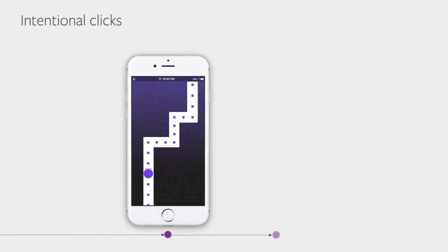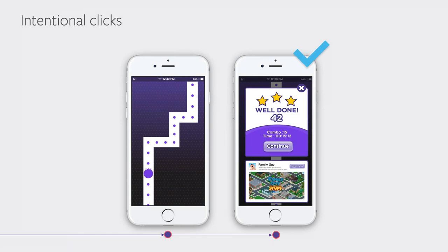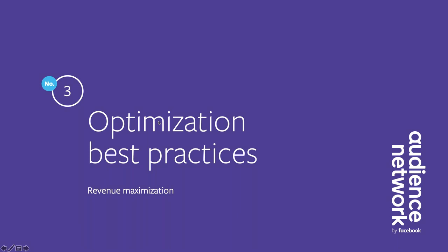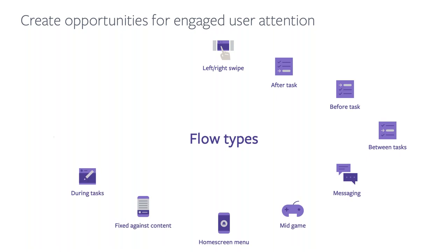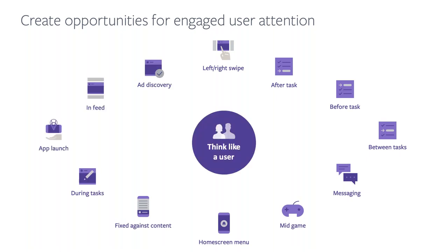The only clickable area should be the CTA button and the X out button to minimize accidental clicks. What we really want is intentional clicks — advertisers want to know that the actions users are taking are deliberate. This is an example of a good ad experience where the ad shows up after the task was finished, when the user wasn't interrupted. There are many opportunities within most apps to place an ad where the user would be more receptive and more engaged.